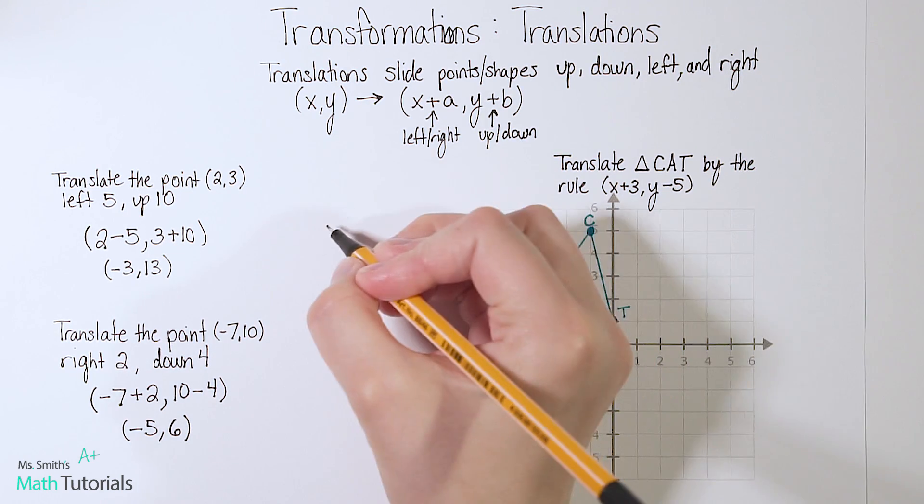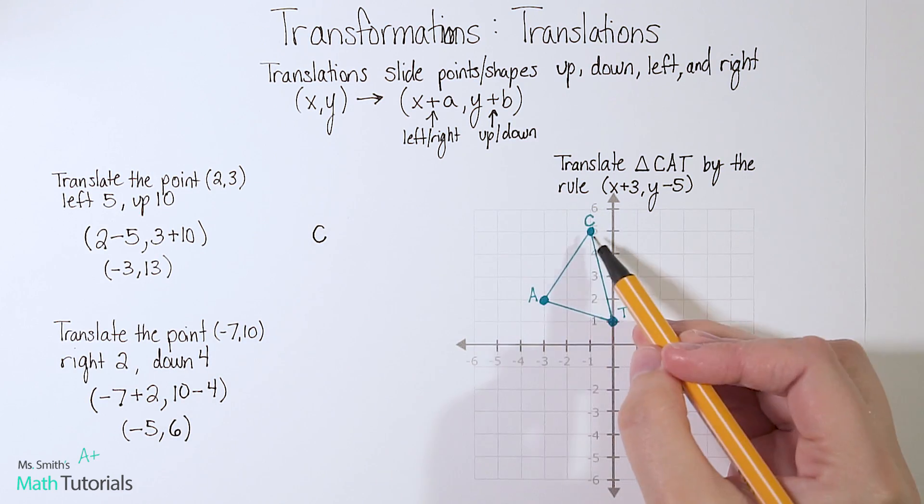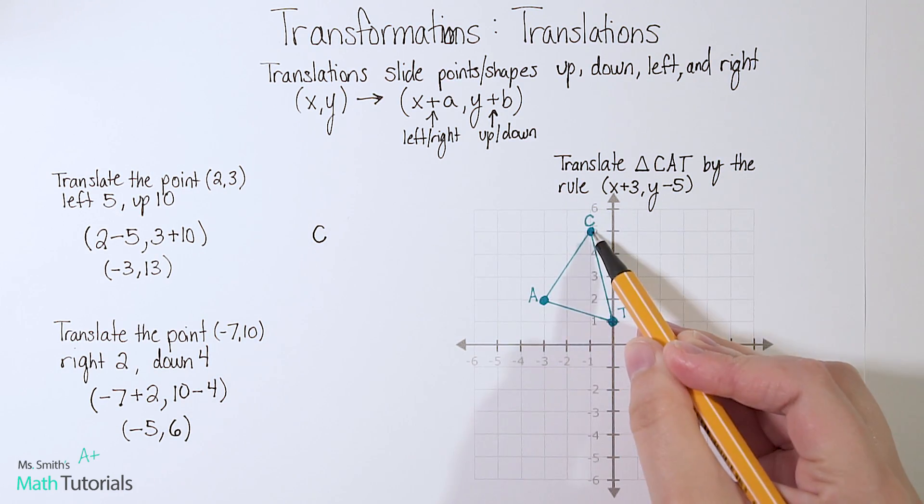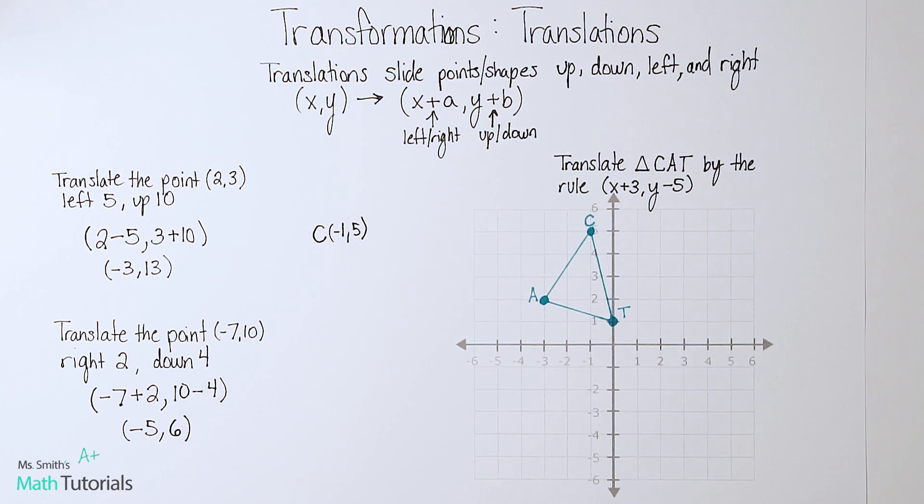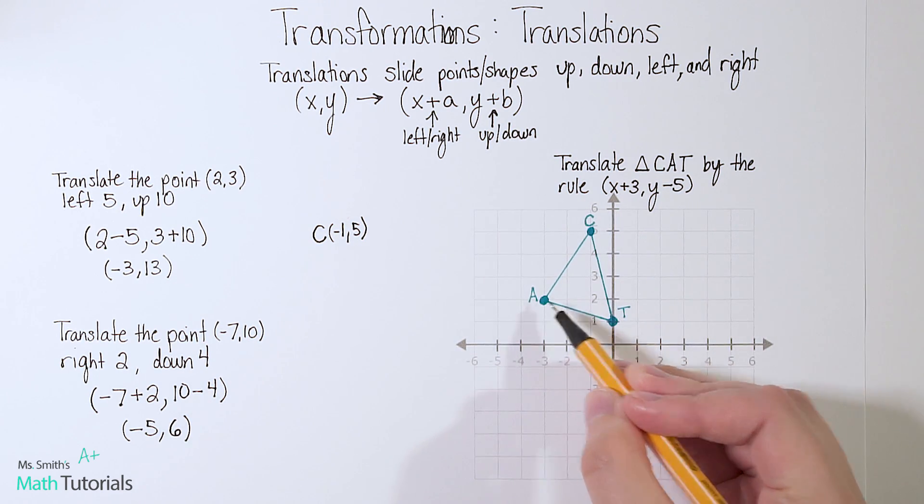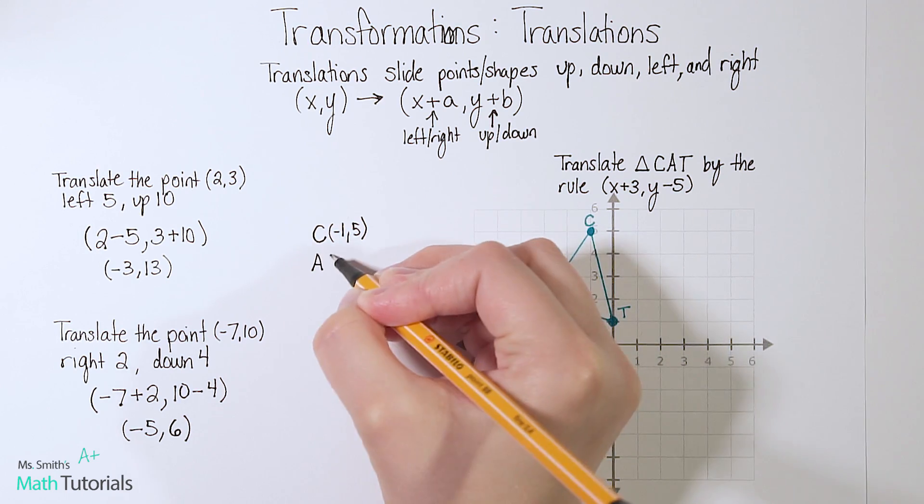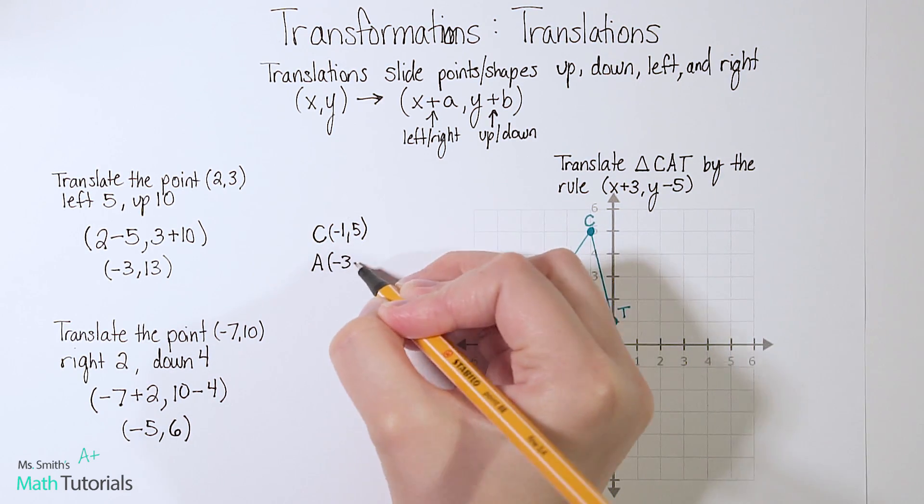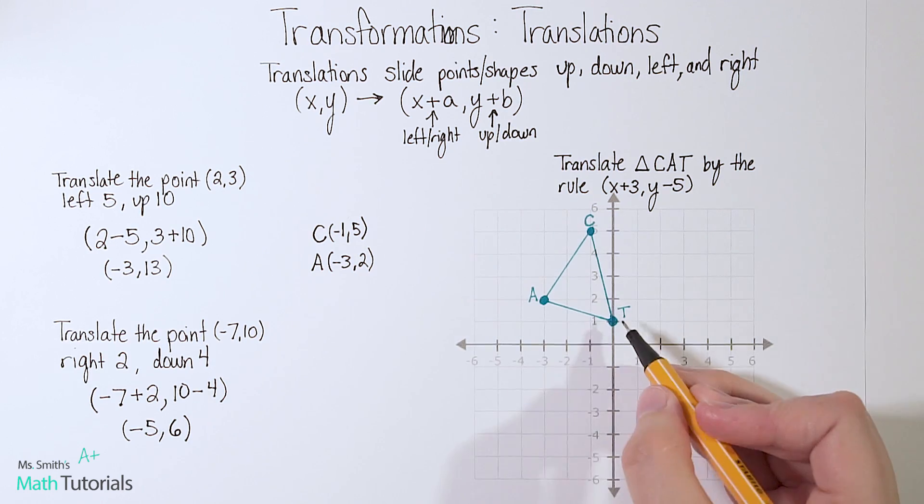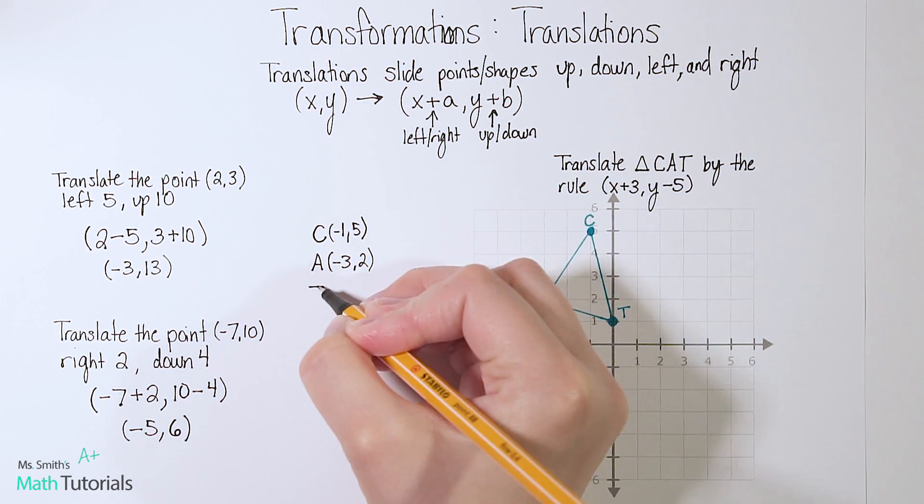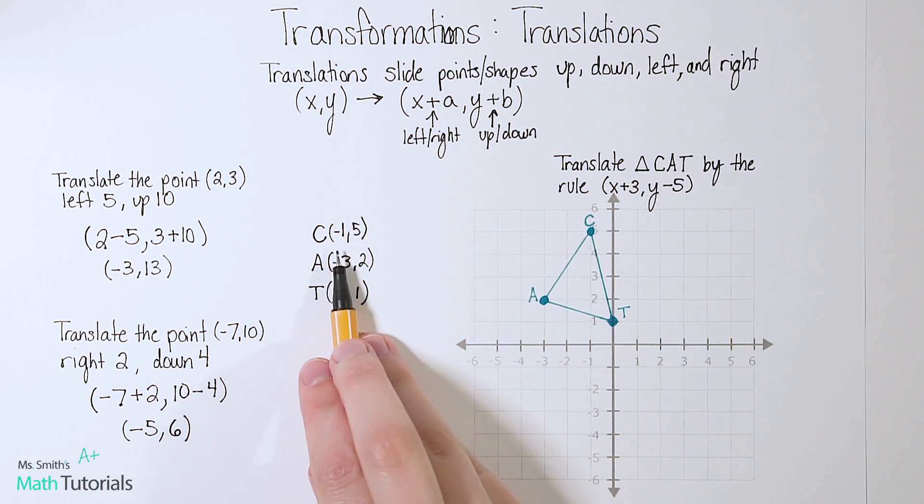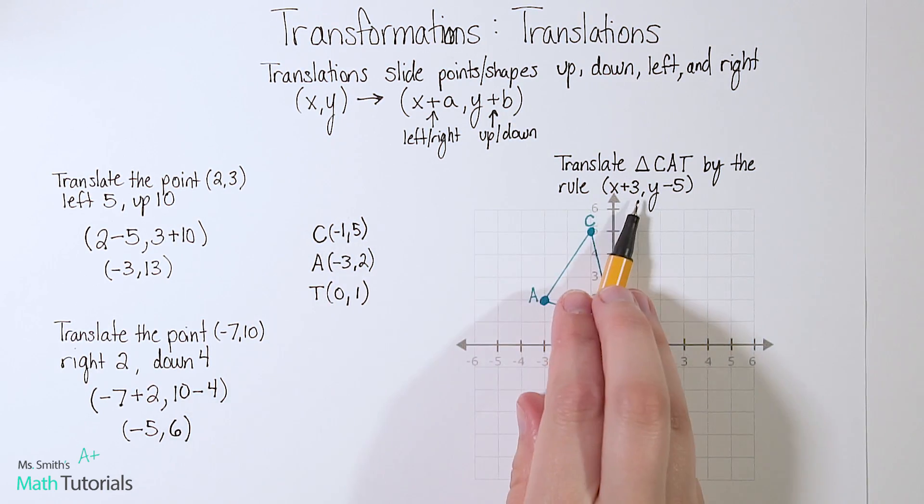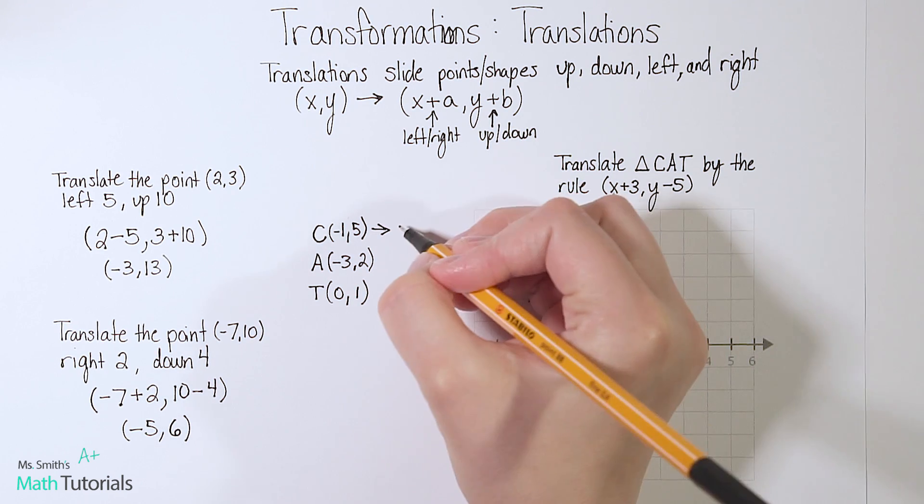So first, let's label what C is. So C currently is sitting at (-1,5). Negative 1, positive 5. A is sitting at (-3,2). T is sitting at (0,1). Okay, now we're going to each individually take these points and follow this rule to create a new point and a new shape.